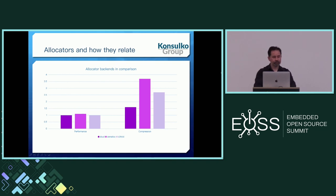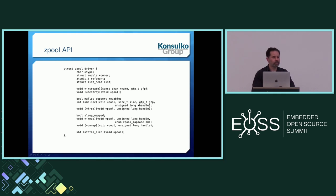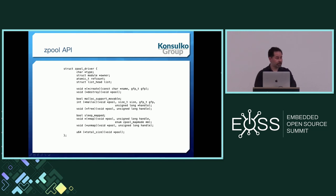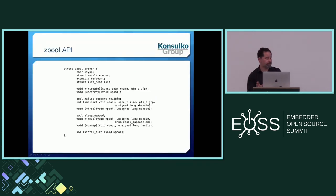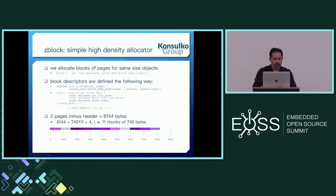I thought we would still need something not as heavyweight as ZSMalloc doing more or less the same thing. This is where ZBlock might come into play. Just as a reference, this is the API structure that every allocator has to fill in and register for ZSwap to be aware of it and be able to select it. ZBlock is a simple high-density allocator for small objects. The idea is to allocate blocks of pages and store same or almost same size objects in these pages as if there's an array.